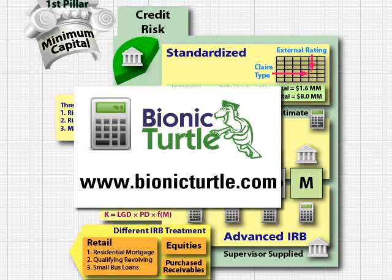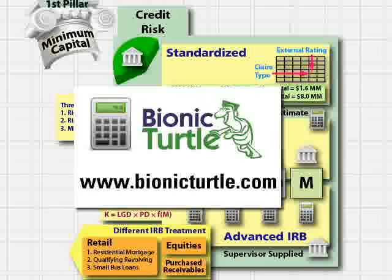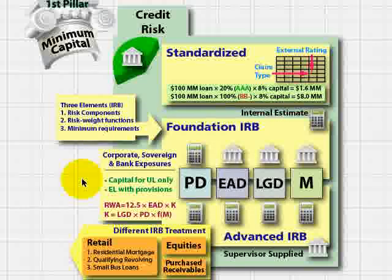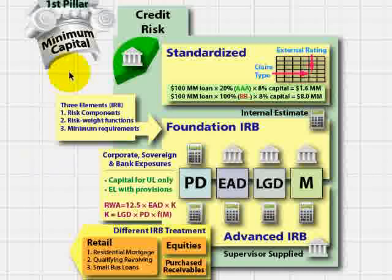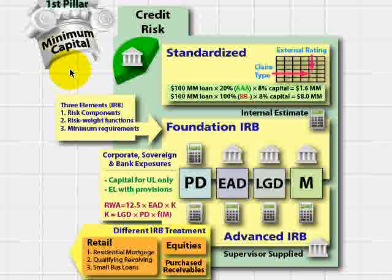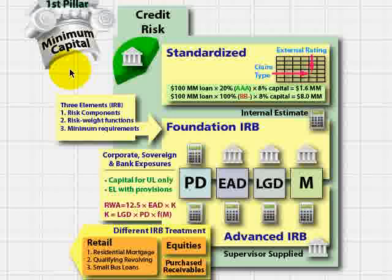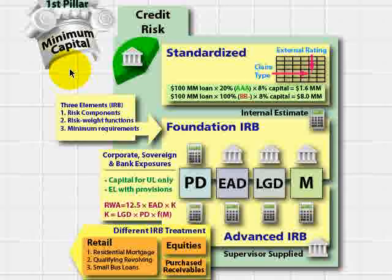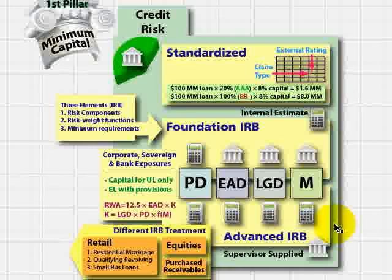Hi, this is David Harper of Bionic Turtle with a quick review of the internal ratings-based risk-weight function under Basel II. To keep this in perspective, recall that Basel II has three pillars, and it's the first pillar that contains the quantitative rules for determining the minimum capital requirements. Within that first pillar, there are rules for determining the capital charge for each of credit risk, market risk, and operational risk. This graphic or visual summary only refers to the credit risk rules under the first pillar.